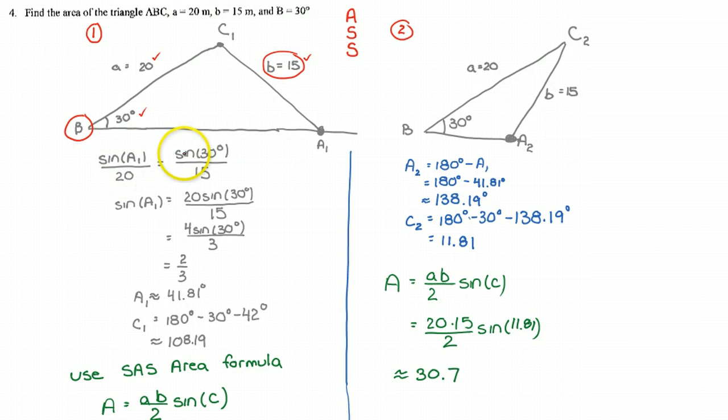Sine A1 over 20, sine 30 degrees over 15. I do a little math and I end up with A is approximately 41.81 degrees.